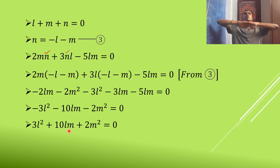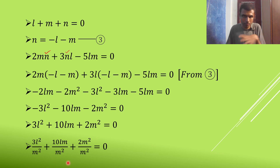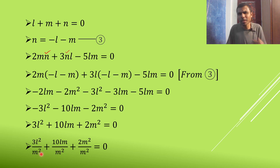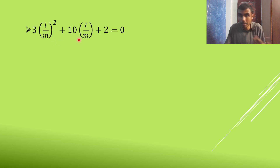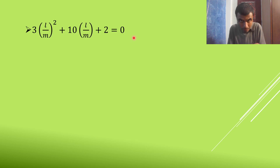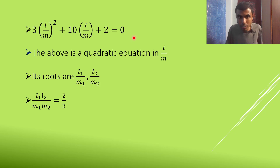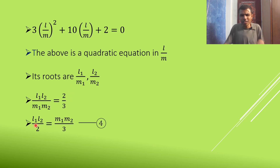Same approach: divide by M². We get 3(L/M)² + 10(L/M) + 2 = 0. This is a quadratic in L/M, with roots L₁/M₁ and L₂/M₂. Product of roots = C/A = 2/3. Rearranging: L₁L₂/2 = M₁M₂/3. Mark this as equation 4.